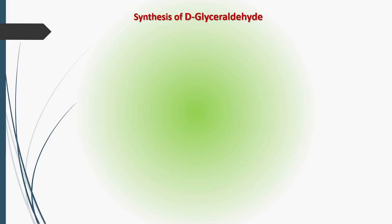In the last lecture we already discussed the chiron approach, the differences between the chiron approach and retrosynthesis, what is a chiral compound, the meaning of chiron, the chiral precursor, and what type of starting material we can use for the synthesis of a natural product. Today in this lecture we are going to synthesize D-glyceraldehyde.